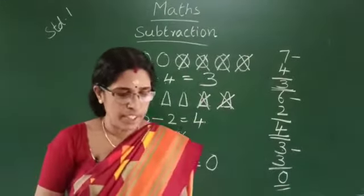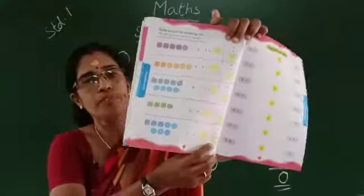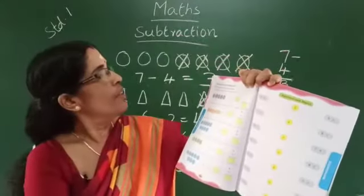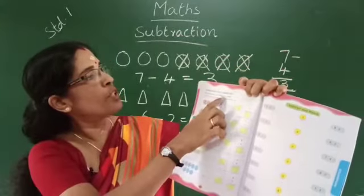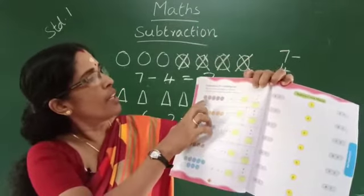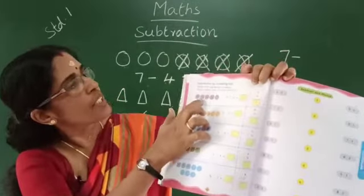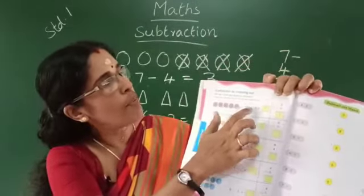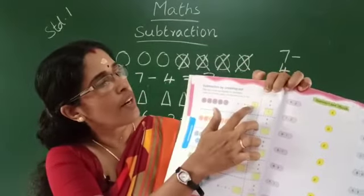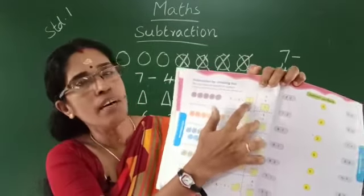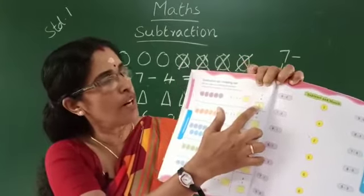Now take your textbook, page number 14. We can cross out objects to subtract. How many circles? 5. 5 minus 4. How many remaining? 1. 5 minus 4 is equal to 1.